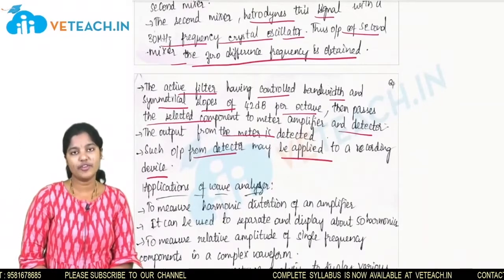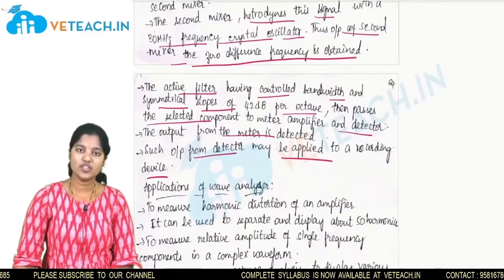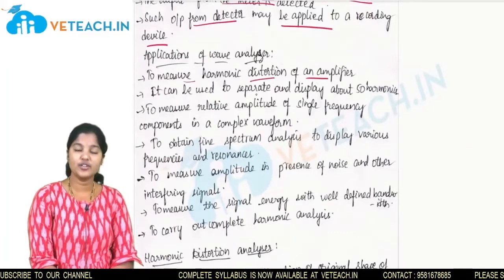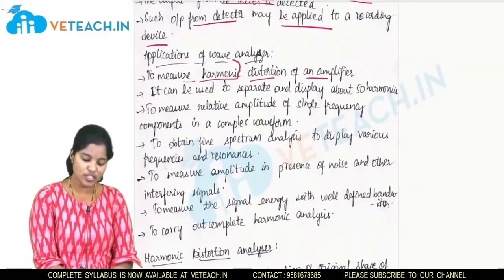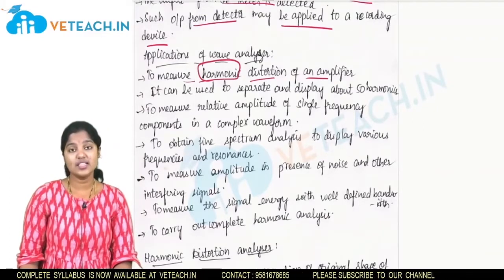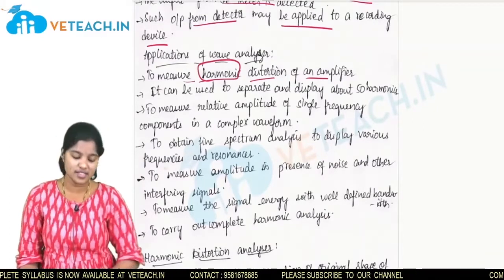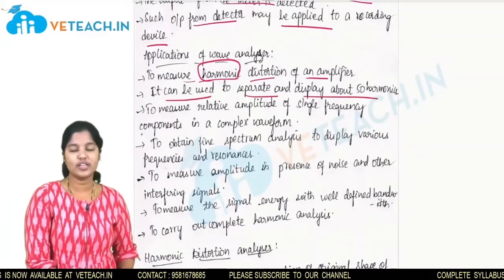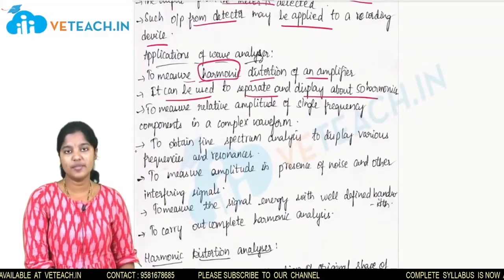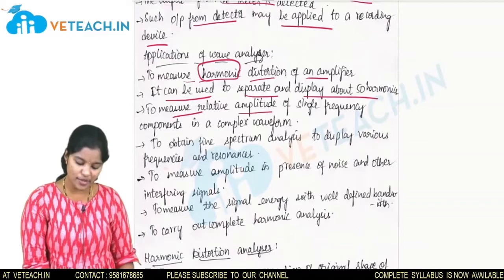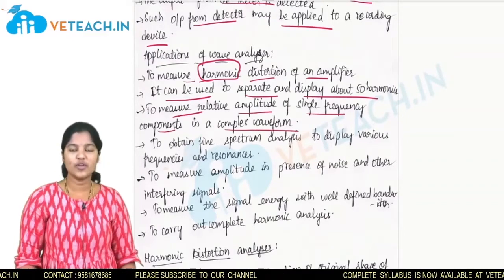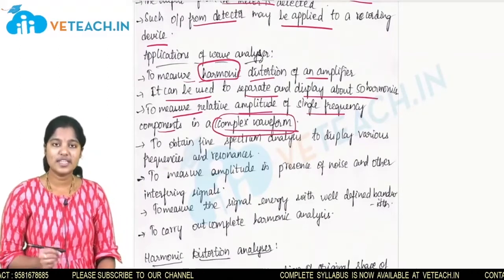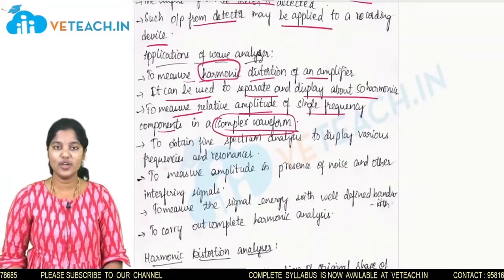The applications of a wave analyzer include: measuring the harmonic distortion of an amplifier, where each harmonic frequency can be individually analyzed. It can also be used to separate and display up to 50 harmonics. It is used to measure the relative amplitude of a single frequency component in a complex waveform, where each and every frequency can be analyzed.